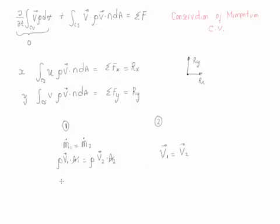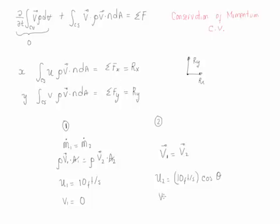Now let's calculate the velocity components at the two control surface points. The x-component of velocity at point 1 equals the incoming velocity, which is 10 feet per second. There is no y-component at point 1, so v₁y equals zero. At point 2, the x-component is 10 feet per second times cosine of angle theta, and the y-component is 10 feet per second times sine of angle theta.